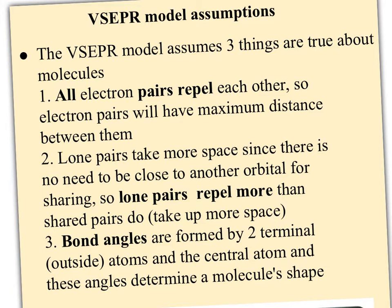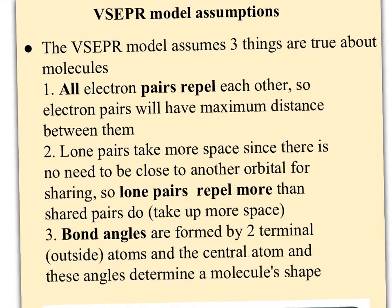Lone pairs are going to take more space since there's no need to be close to another orbital for sharing. So lone pairs repel more than shared pairs. In other words, lone pairs are going to take up more space than shared pairs. And then finally, bond angles are formed by two terminal or outside atoms and the central atom, and it's these angles that determine a molecule's shape.